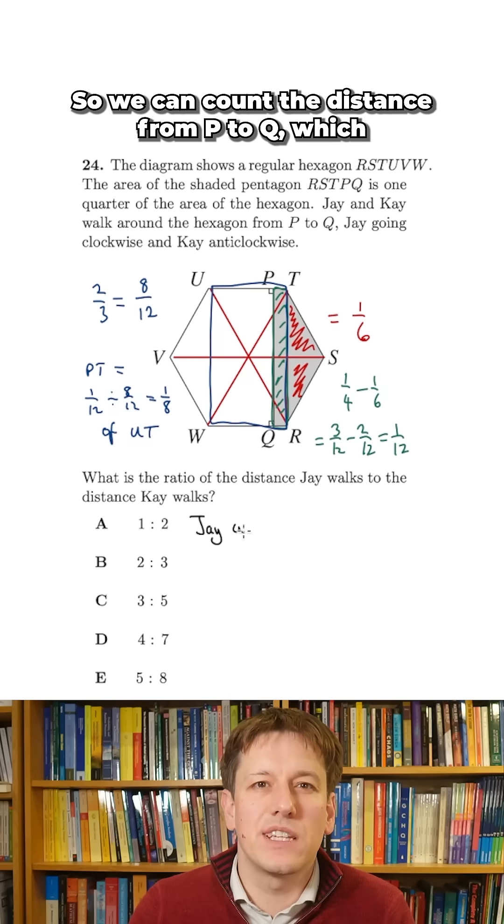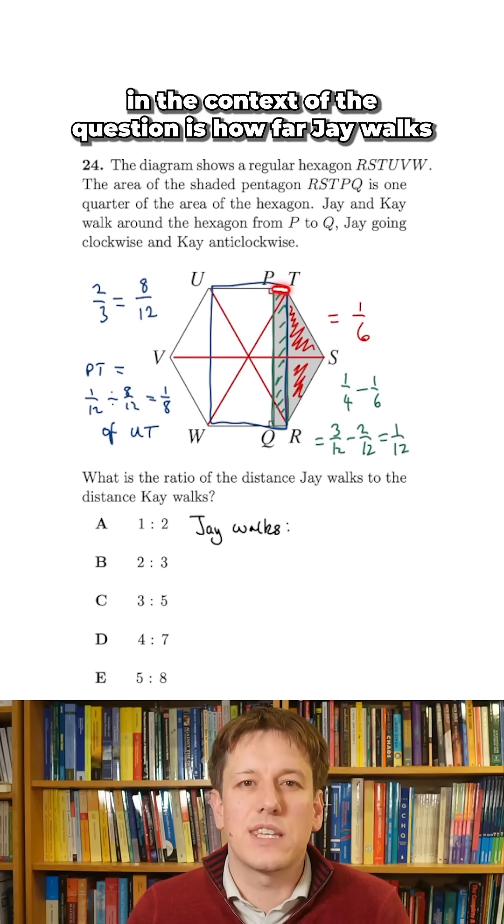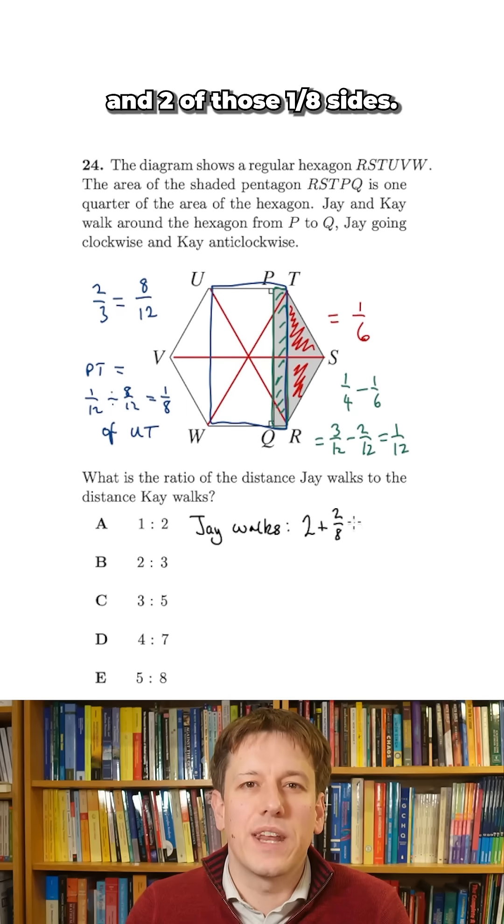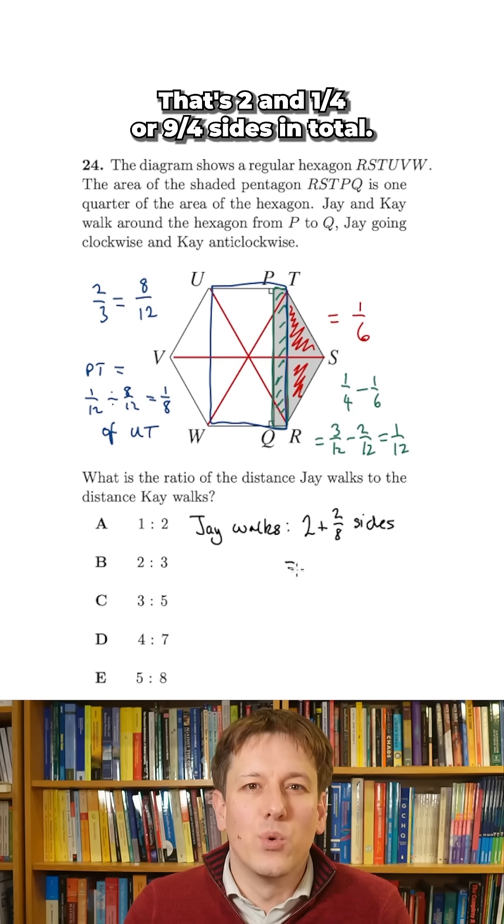So we can count the distance from P to Q, which in the context of the question is how far J walks, as two and two eighths sides, two full sides and two of those one eighth sides. That's two and a quarter, or nine over four sides in total.